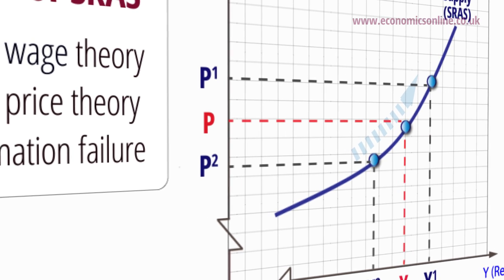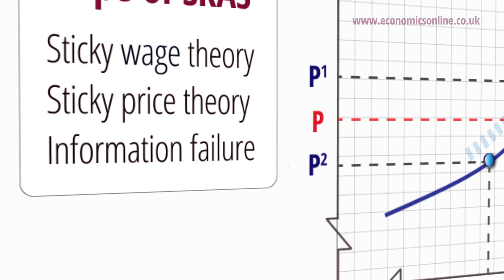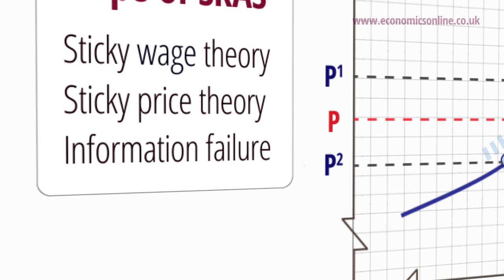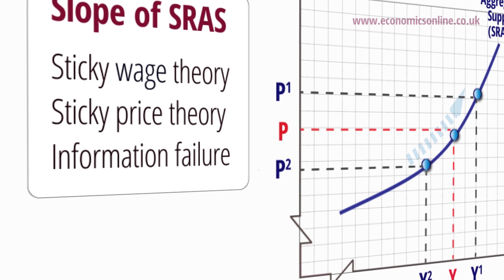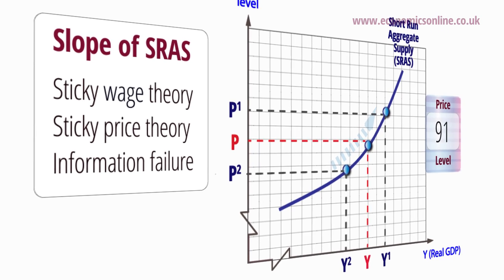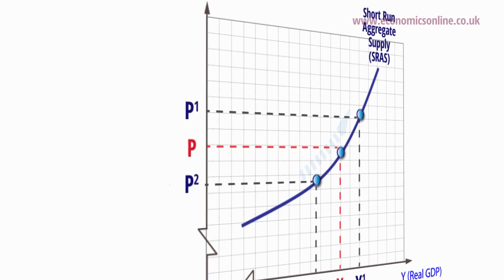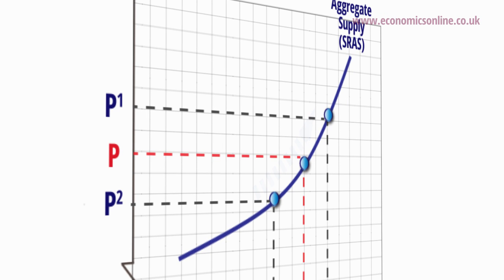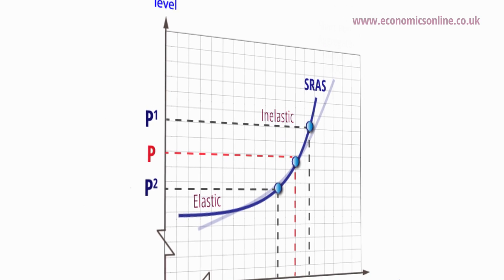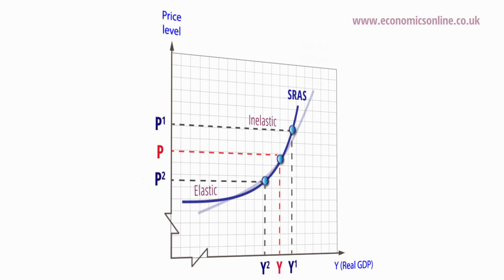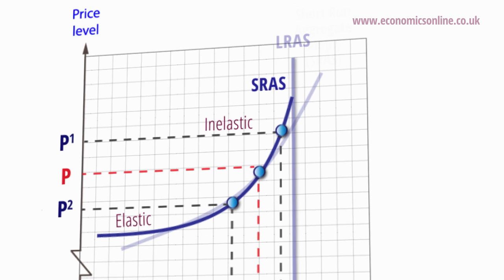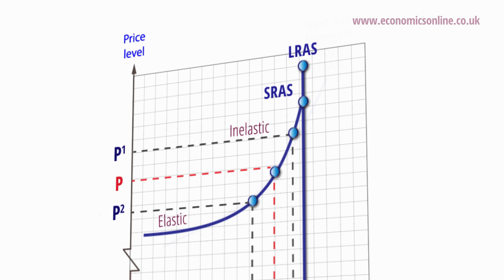Lastly, information failure can also help explain the positive slope of the SRAS curve. Suppliers may wrongly take the general price level as an indication of the specific market conditions facing them. For example, if the price level is rising, firms may assume their prices will also rise and increase their production. The extent to which SRAS adjusts to new price levels, that is the elasticity of short-run supply, will vary considerably from industry to industry and depend upon how close the economy is to its natural rate of output. With no slack in the economy, it is unlikely that output can increase at all, and the SRAS curve becomes vertical.